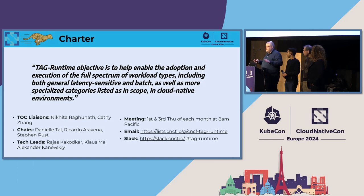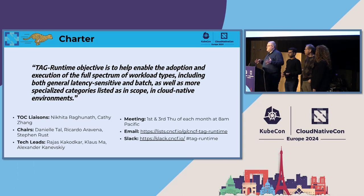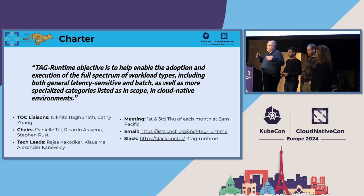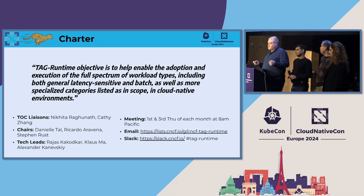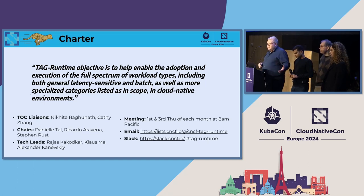You probably know how the scope of SIGs in Kubernetes are done, and you've probably seen some of the TAGs in CNCF which also scope to a particular subject. For us, we are a standard TAG — we have Slack, regular meetings, chairs, and technical leads. What is different for us is the scope of projects we are covering: the whole range of workloads and how to run them not only on Kubernetes but on the CNCF stack.